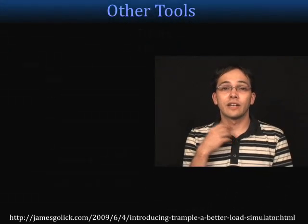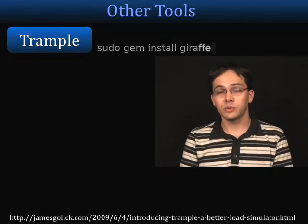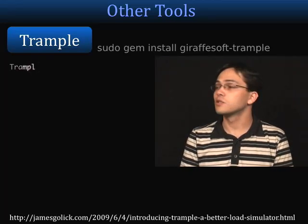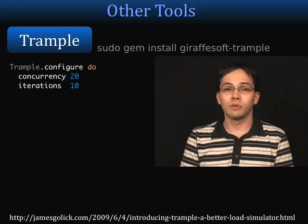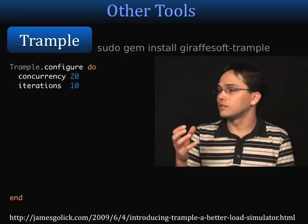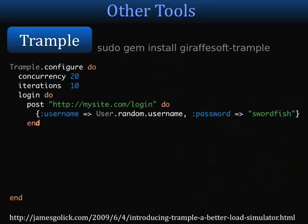Now we'll take a quick look at a few other tools for load testing. The first, which is really new and was created by James Gallick pretty recently, is called Trample. It's a Ruby gem. In order to run it, it looks something like this: trample configure, concurrency 20 — so 20 requests at the same time — iterations 10. You can actually specify a login, so if you read this, you can see that we're logging in as a random user, which is really simulating what our production environment might look like.